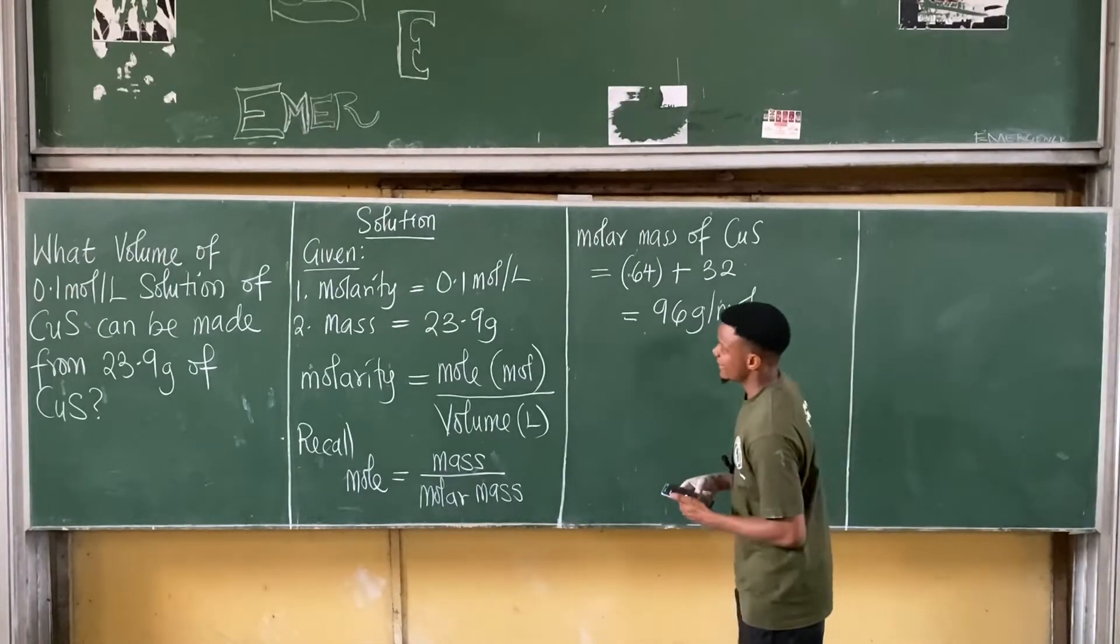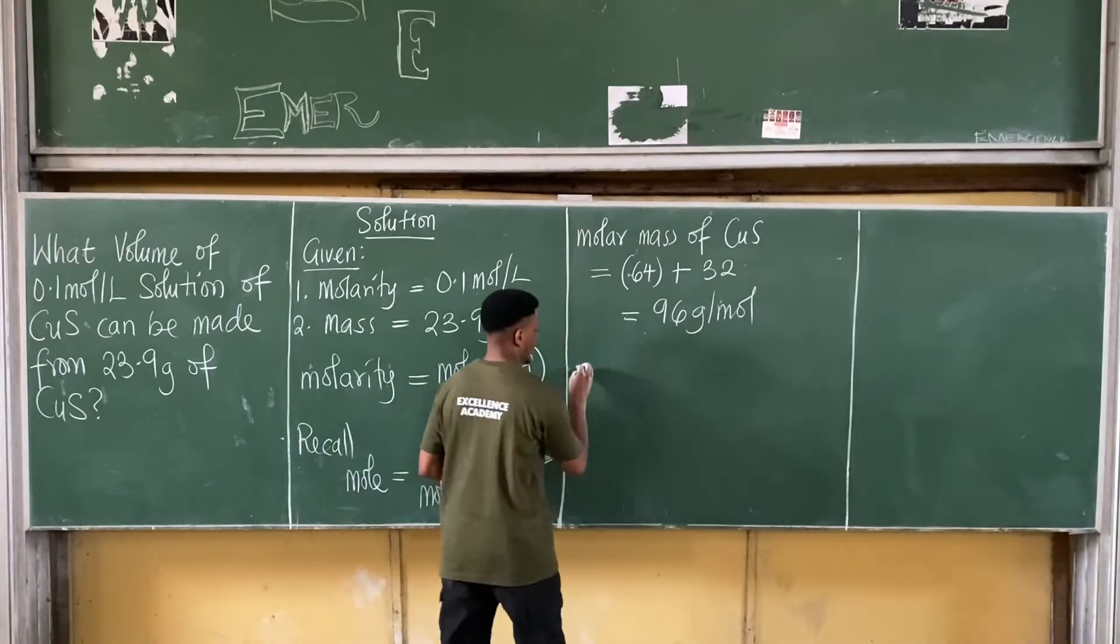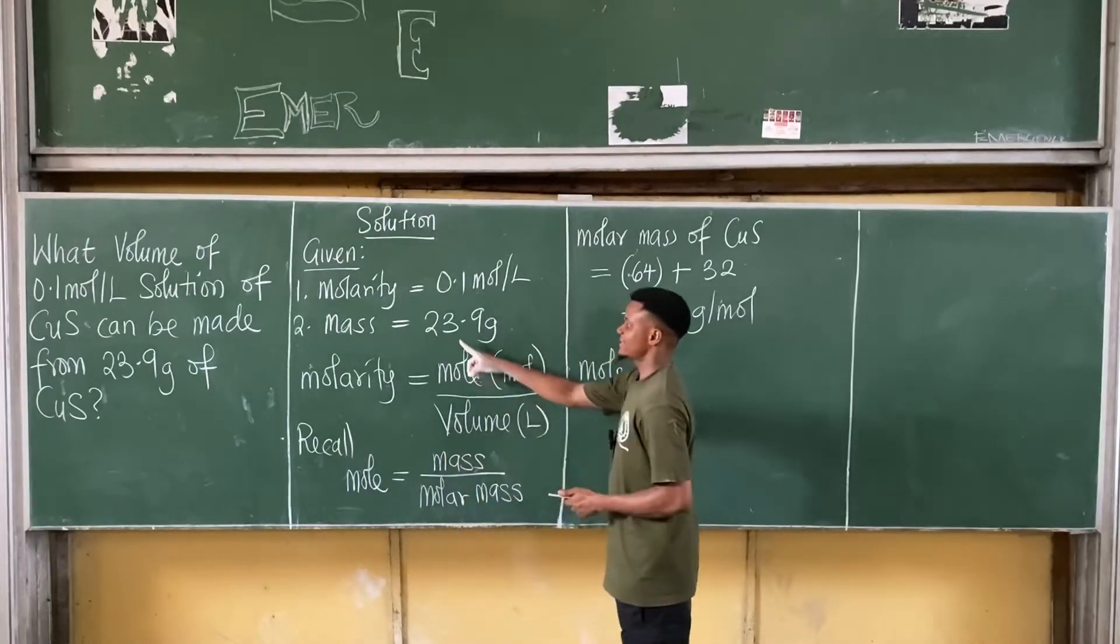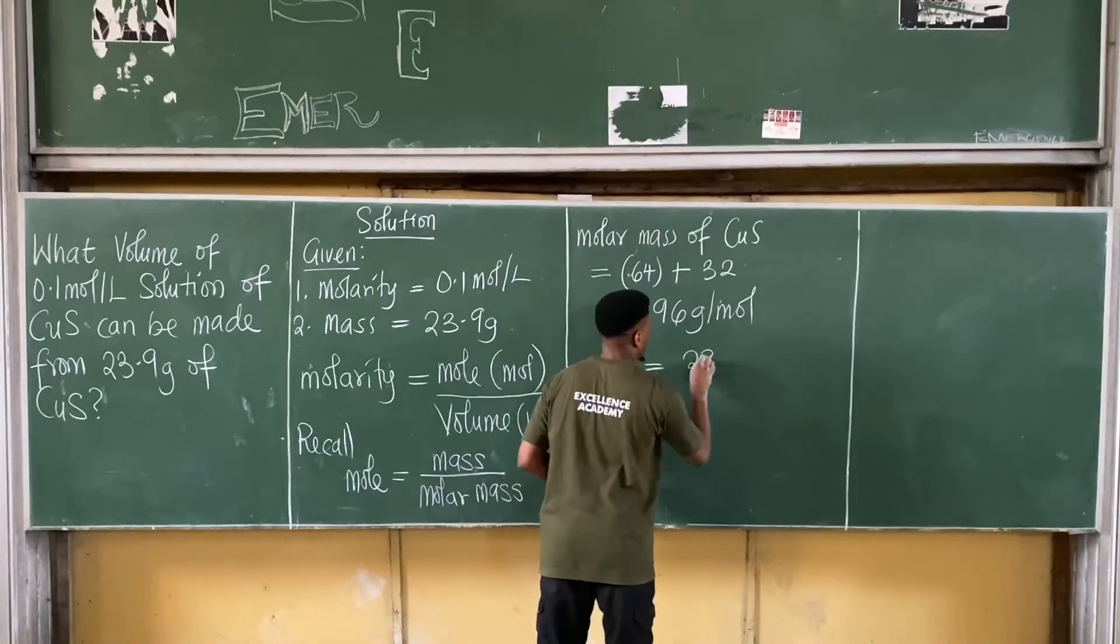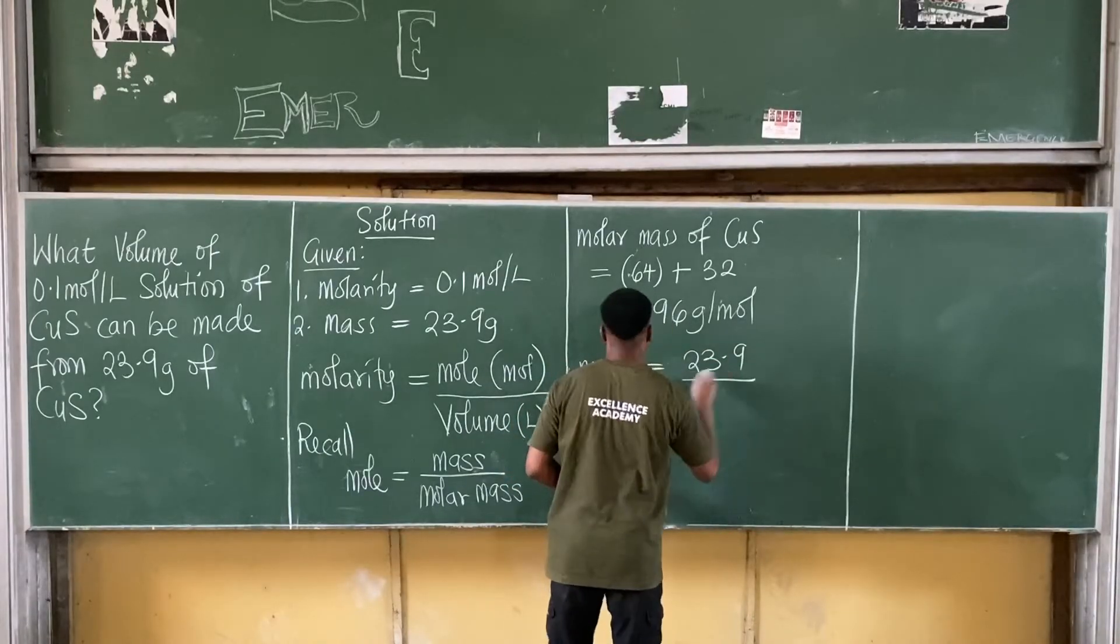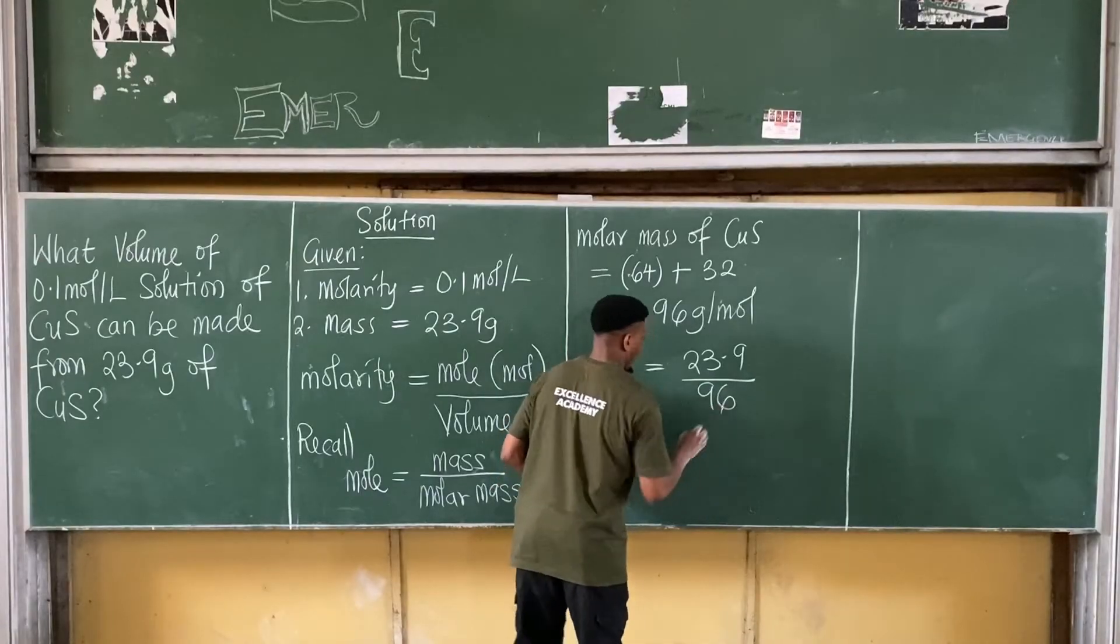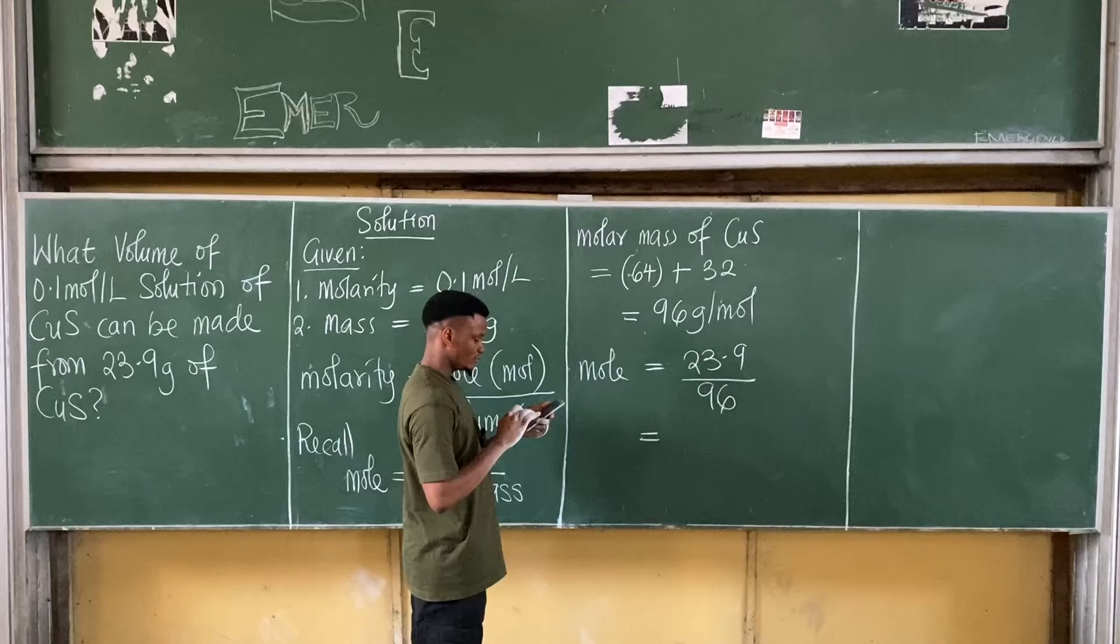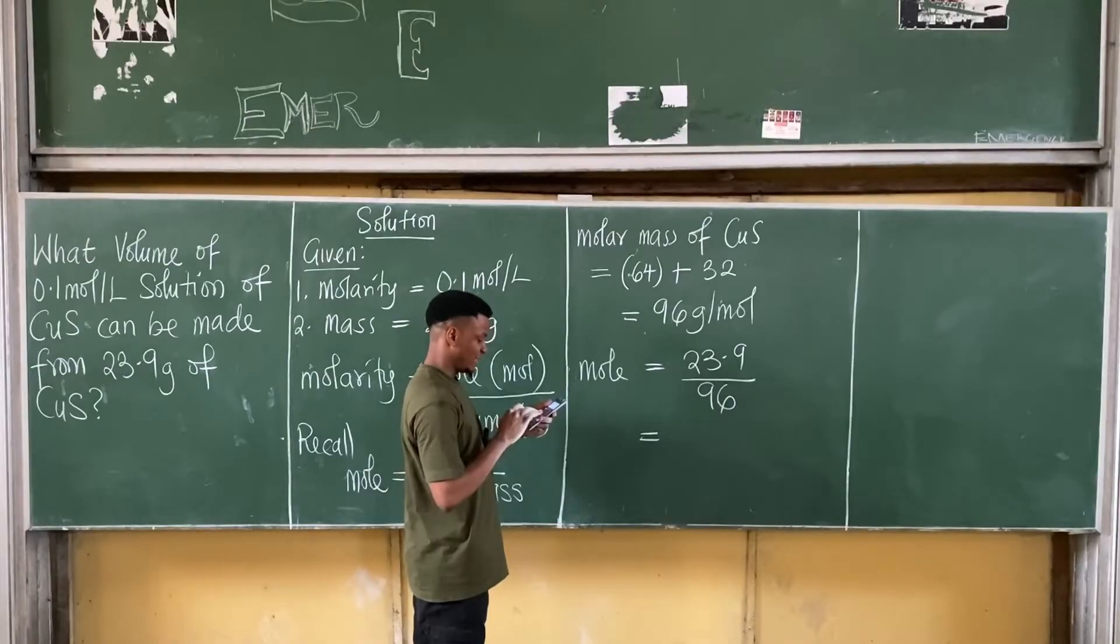Now, if this is correct, my next task would now be to find the mole. From here, the mole, therefore, is equal to the mass, which is 23.9, all over the molar mass, which is 96. If I work on this, it becomes 23.9 divided by 96.